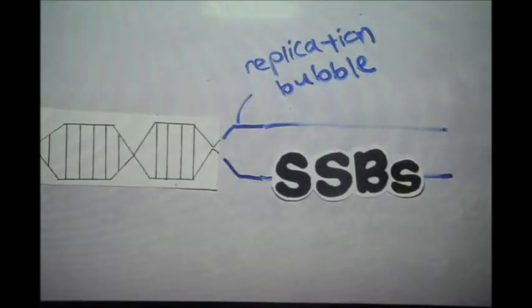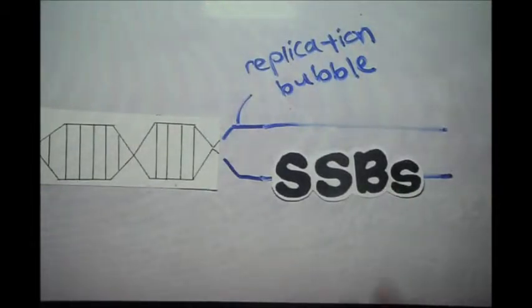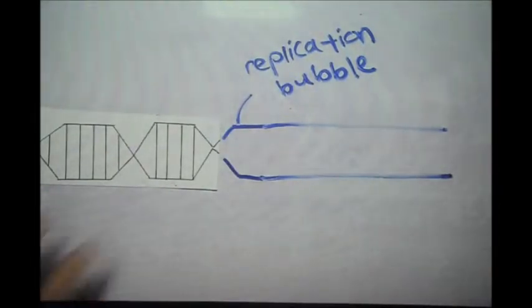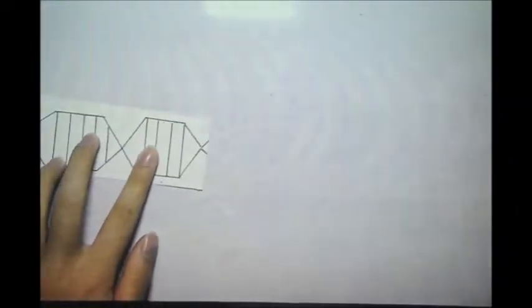Single stranded binding proteins come in to prevent the unpaired bases of the template of the lagging strand from reverting to the double helical structure.